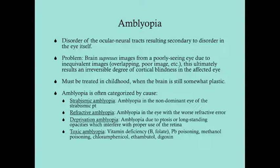So what are the causes of amblyopia? This is pretty much all the things that can go wrong with the eye in childhood. First off, you can have strabismus — where the eyes are not aligned properly. If the eyes are not aligned properly, they're not going to see the same image, and that results in diplopia, and the brain is going to suppress one of those images. So the non-dominant eye in the strabismic patient is going to be suppressed, be it left or right, and you're not going to form connections from that eye.